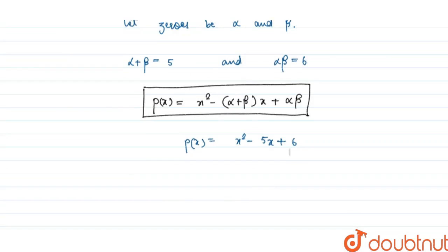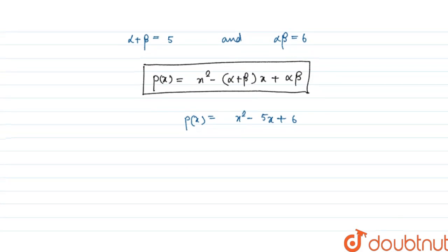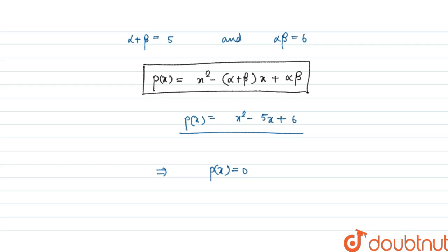Now we have to find the zeros of quadratic polynomial. So for finding zeros, we have to equate p(x) equal to 0.